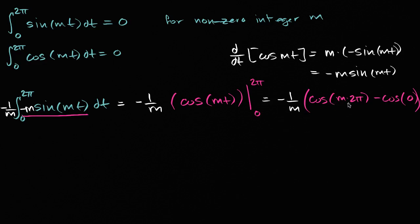And so let's see, cosine of any multiple of two pi, well that's just gonna be one. And cosine of zero, well that's also one. So you have one minus one is zero, times negative one over m. Well this is all going to evaluate to, this is the result we wanted, this is all going to evaluate to zero. So we have just proven that first statement.